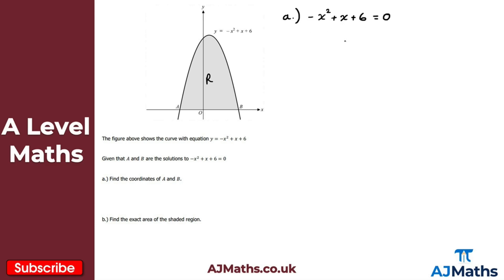For part a, we set minus x squared plus x plus 6 equal to zero. I'll check whether this factorizes — for these types of questions they generally do. We get two brackets: minus x at the front of one and x at the front of the other. This factorizes as (minus x plus 3)(x plus 2). Checking: minus x times x gives minus x squared, minus x times 2 gives minus 2x, 3 times x gives 3x giving a net positive x, and 3 times 2 gives positive 6. ✓